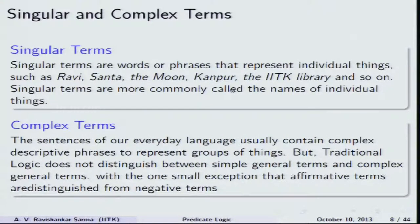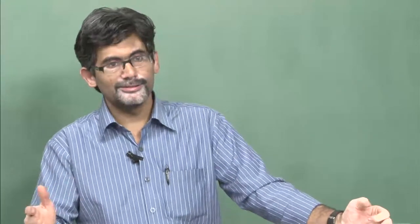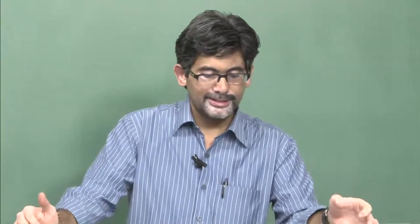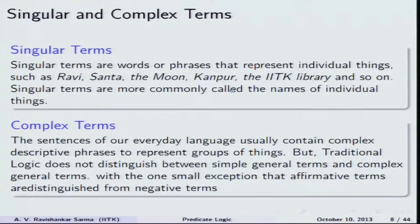Now, we said predicate logic is introduced because propositional logic shows an inability to explain singular terms, complex terms, and relational terms. Singular terms are more commonly called names of individual things — any name of anything is considered a singular term. We should note that even Aristotelian traditional logic fails to explain singular terms properly. Complex terms are like complex descriptive phrases in our everyday language used to represent groups of things.